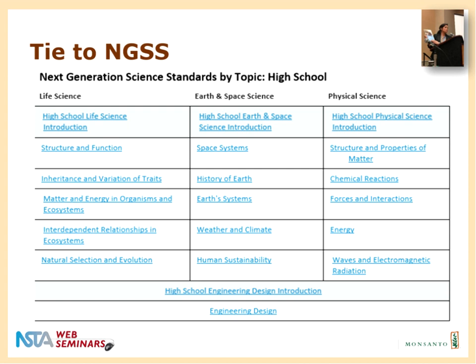When I think of the sophistication of modern agriculture, I can very clearly see the opportunities where the next generation science standards and agriculture intersect. But I'm curious to know where you all see some of these opportunities. Even though it says high school at the top, even if you're not a high school teacher, where do you see some of the next gen science standards aligning with the sophistication of agriculture?